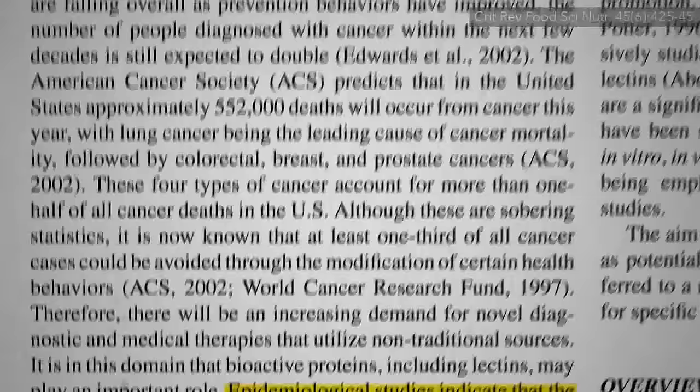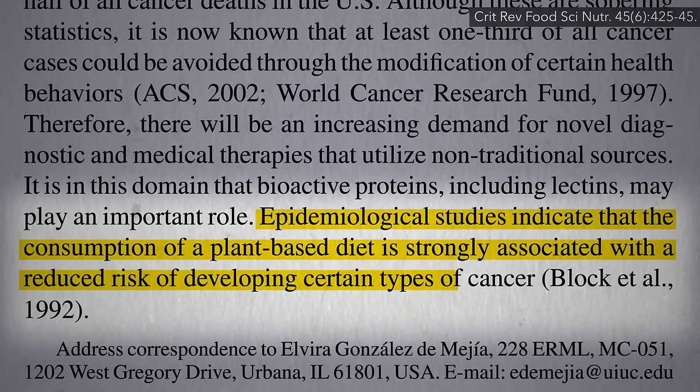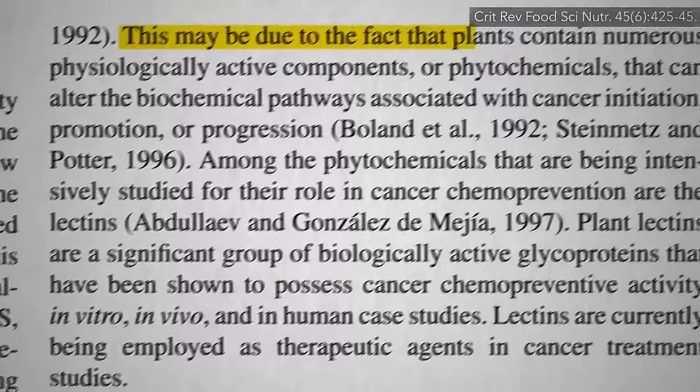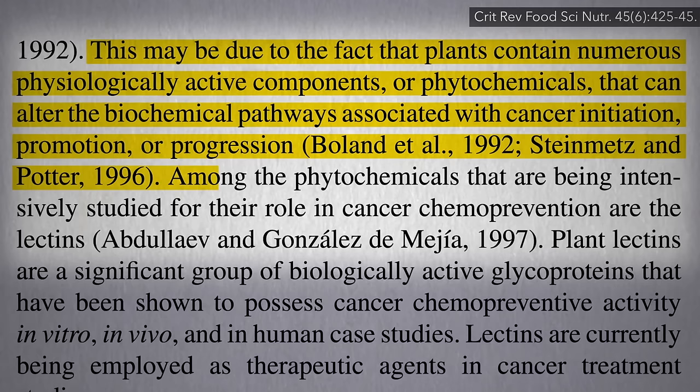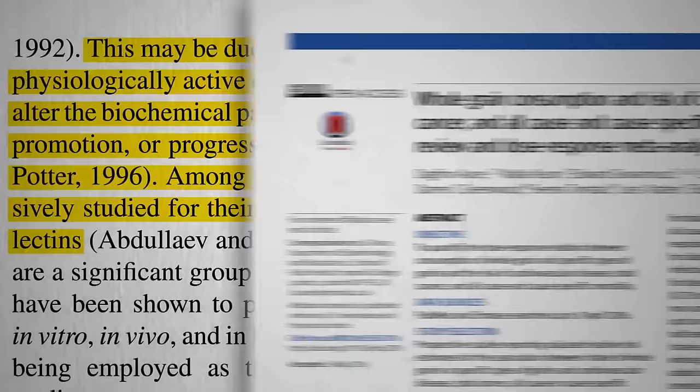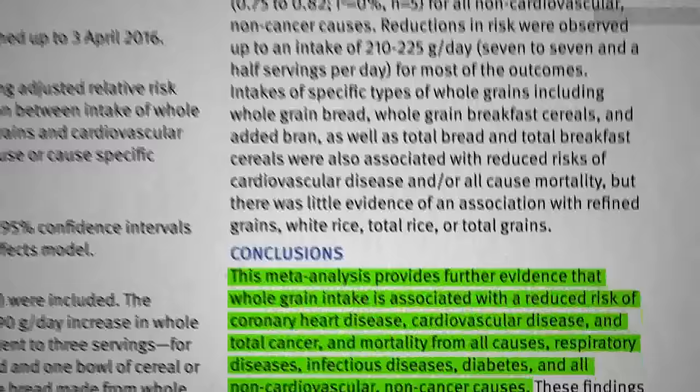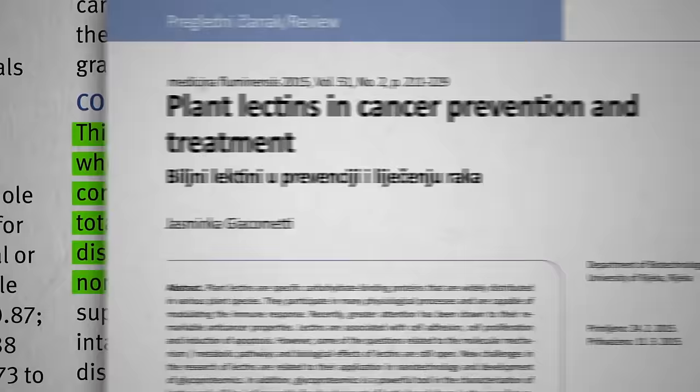But look, we know that population studies show that the consumption of a plant-based diet is strongly associated with a reduced risk of developing certain types of cancer. Now, they could just be eating fewer carcinogens, but plants do have all those active components that do seem to protect against the initiation, promotion, and progression of cancer. And so maybe lectins are one of those protective compounds. We know people who eat more beans and whole grains tend to get less cancer overall. We're just not sure exactly why.